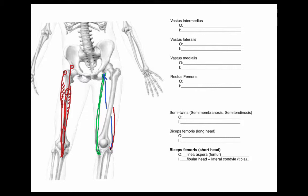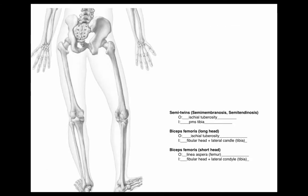Now you can see that on the posterior side of the leg we have the semimembranosus, semitendinosus, and biceps femoris long head — all three of those cross both the hip and the knee, so they extend the hip and flex the knee. Then you have the biceps femoris short head, which only crosses the knee, so it only flexes the knee.